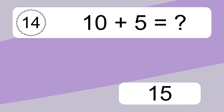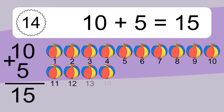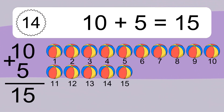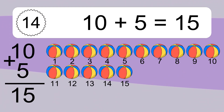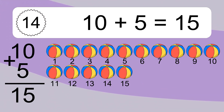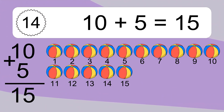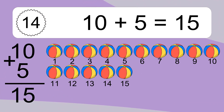10 plus 5 equals 15. Let's count it. 1, 2, 3, 4, 5, 6, 7, 8, 9, 10, 11, 12, 13, 14, 15.